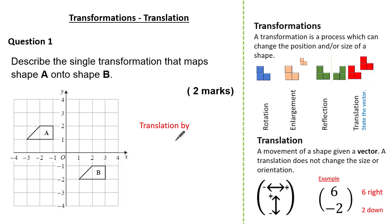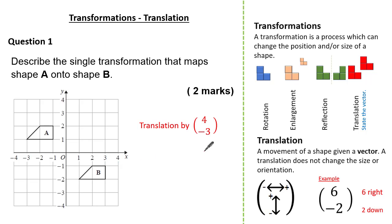The second mark is identifying the vector. Let's look at each corresponding vertex from shape A to shape B. Remember, when writing our vector we go left or right first, then up or down. Starting with the top corner on shape A, we go 4 to the right and 3 down. Checking with another vertex — the top right — we also go 4 to the right and 3 down. So the vector is 4, minus 3, because we went 4 to the right and 3 down. This gets us our 2 marks.